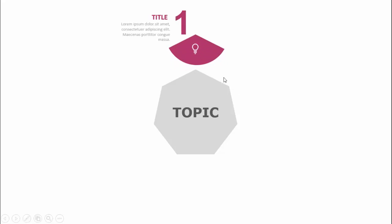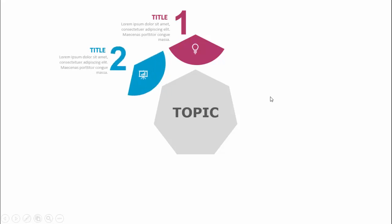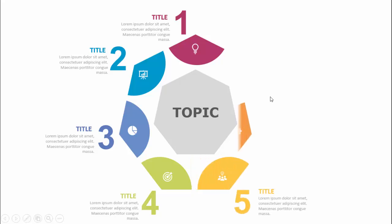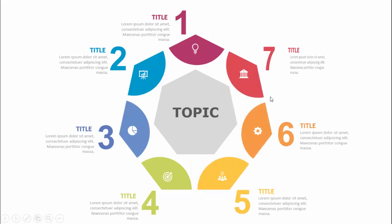When I click, the first option comes with the icon, option number one title, and the detailed text. Then with different colors the second option comes, the third, fourth, fifth, sixth, and seventh. Depending on your requirement you can increase or decrease these options.